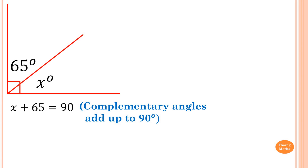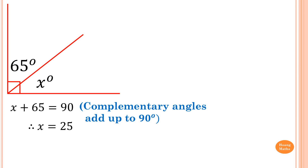All we need to do is get rid of this 65 by doing the opposite — minus 65. So 90 minus 65 is 25. Therefore, x is equal to 25.